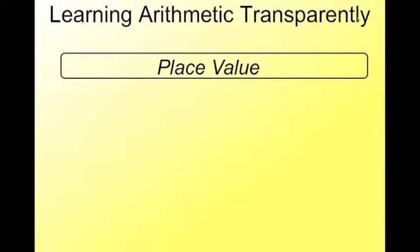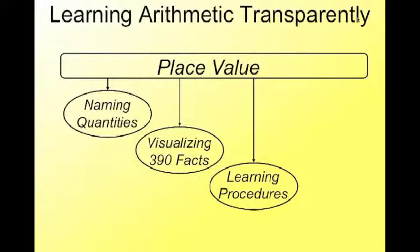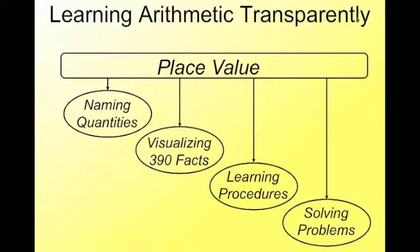So what we want to do is learn arithmetic transparently so you can see it, and it makes it very clear. The way that we propose to do this is starting out with place value. And from place value, you name your quantities, you visualize the 390 math facts, which I'm not going to get into in this presentation, but we're going to talk a little bit about learning procedures and solving problems.